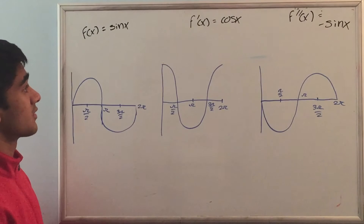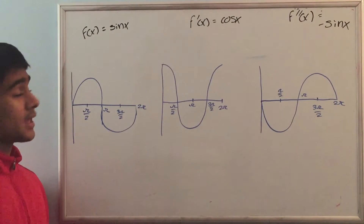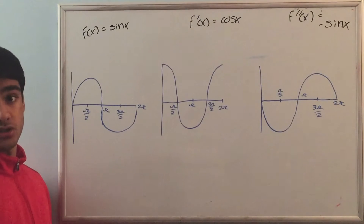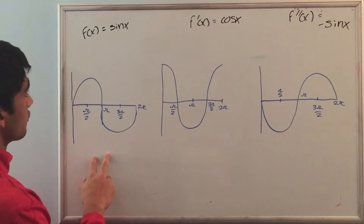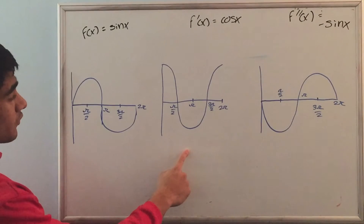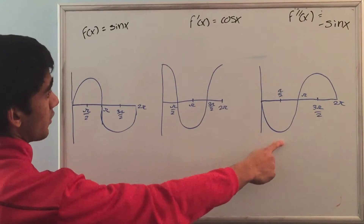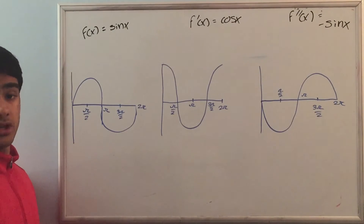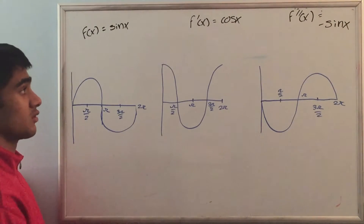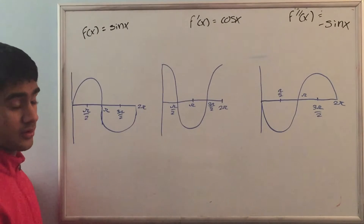In this video I wanted to discuss the relationship between the first derivative, second derivative, and the original function. I feel like using the trig functions are the best to show this. So I graphed the original function sine x over here, the derivative of that cosine x over here, and the second derivative of sine x, or negative sine x over here. I first want to look at the relationship between sine x and cosine x, or the original function and the derivative.